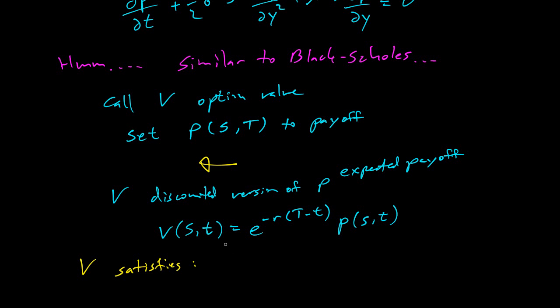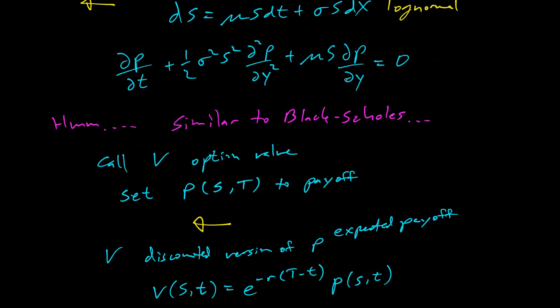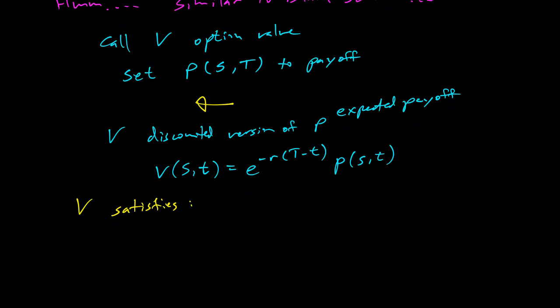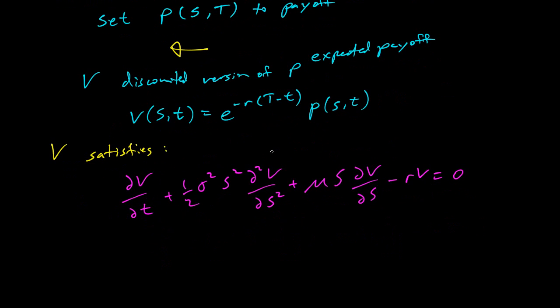Then we can notice that V satisfies almost this equation up here just that we get this extra term. We actually get partial of V with respect to t plus a half sigma squared S squared second partial with respect to S squared plus mu S partial of V respect to S minus rV equals zero. Now this is looking even more like Black-Scholes.